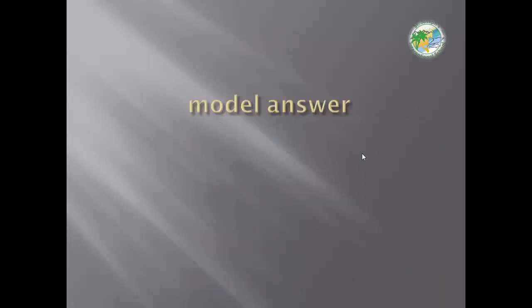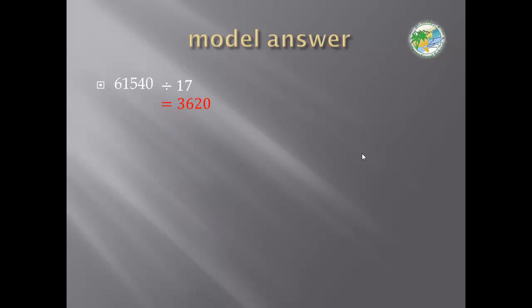Primary 5, now model answer. Take your time if you can't do this question now, but 61,540 divided by 17 equals 3,620. This is a website, you can go to this website and look at the video for this lesson. Thank you for listening to Primary 5. I hope everyone can understand this lesson. If you can't understand, you can repeat the video many times. Thank you.